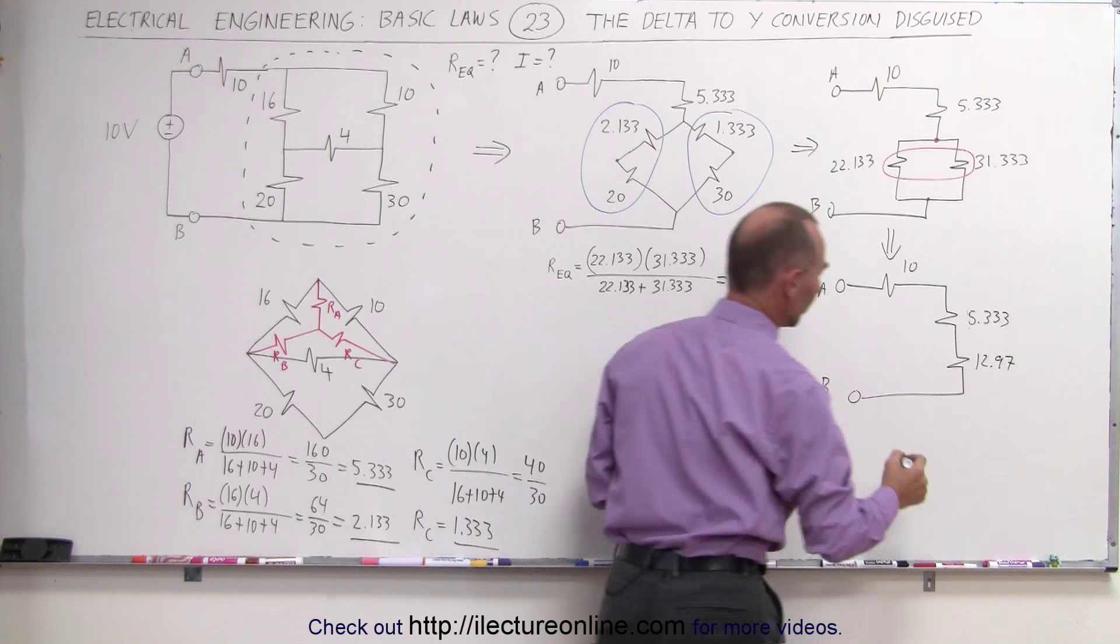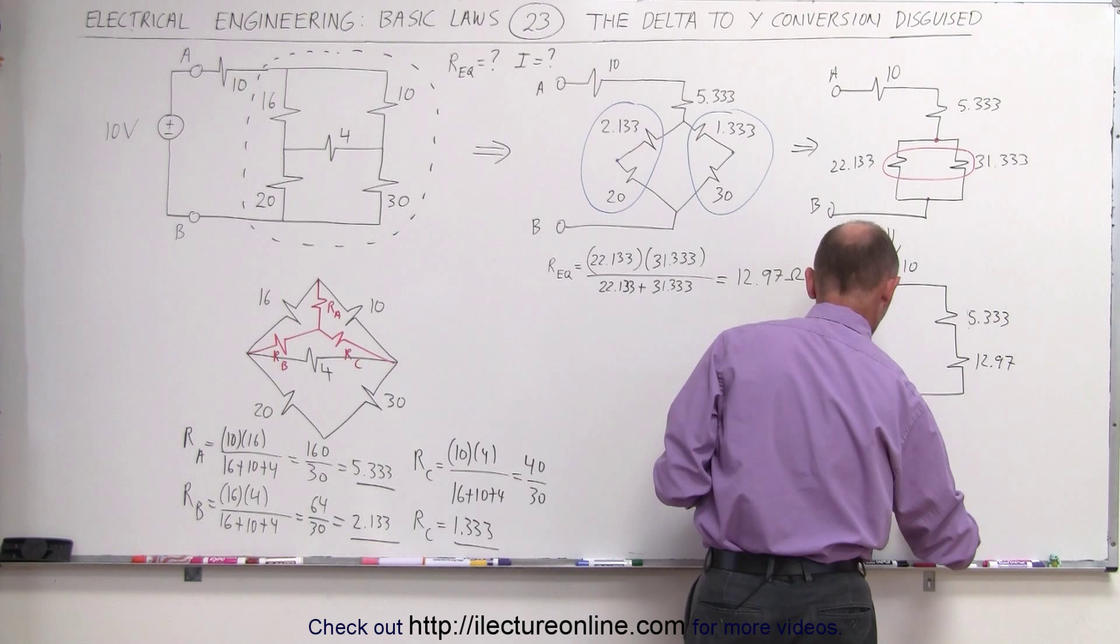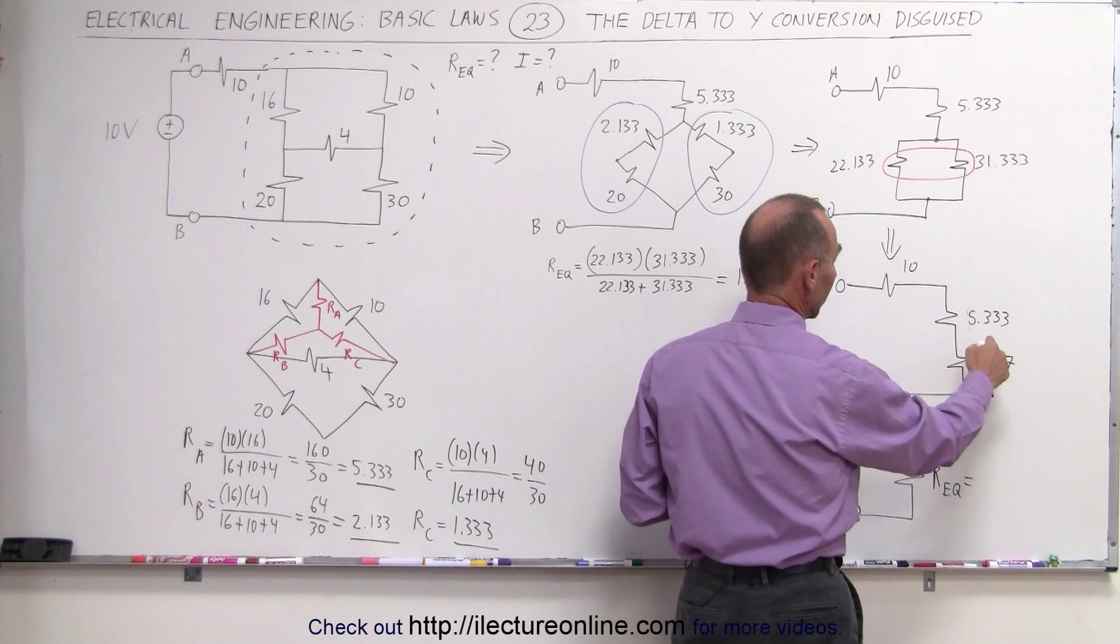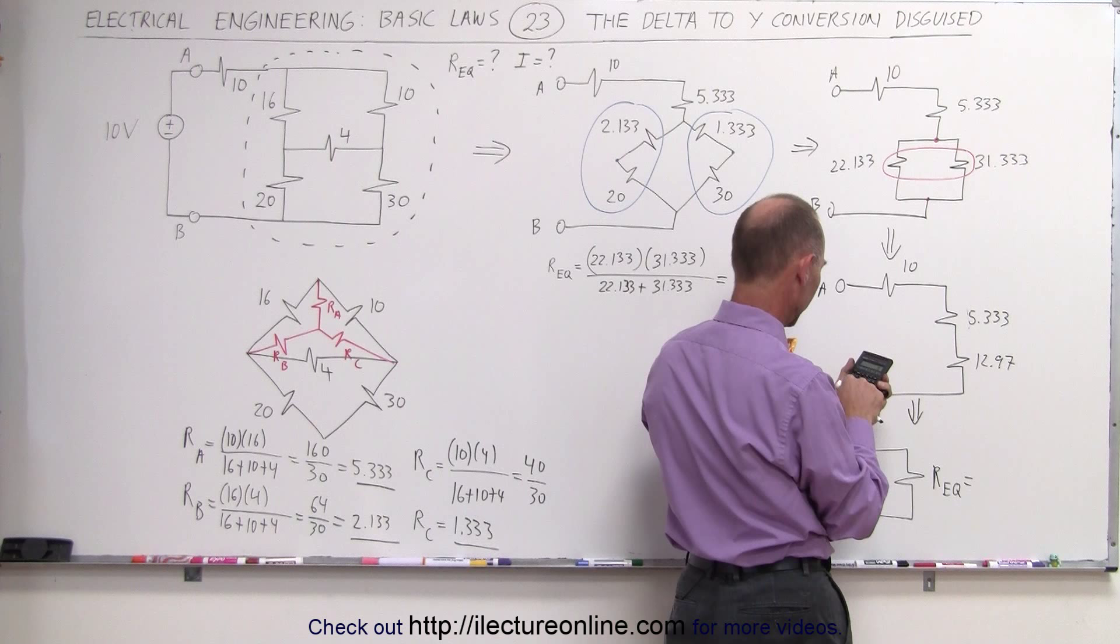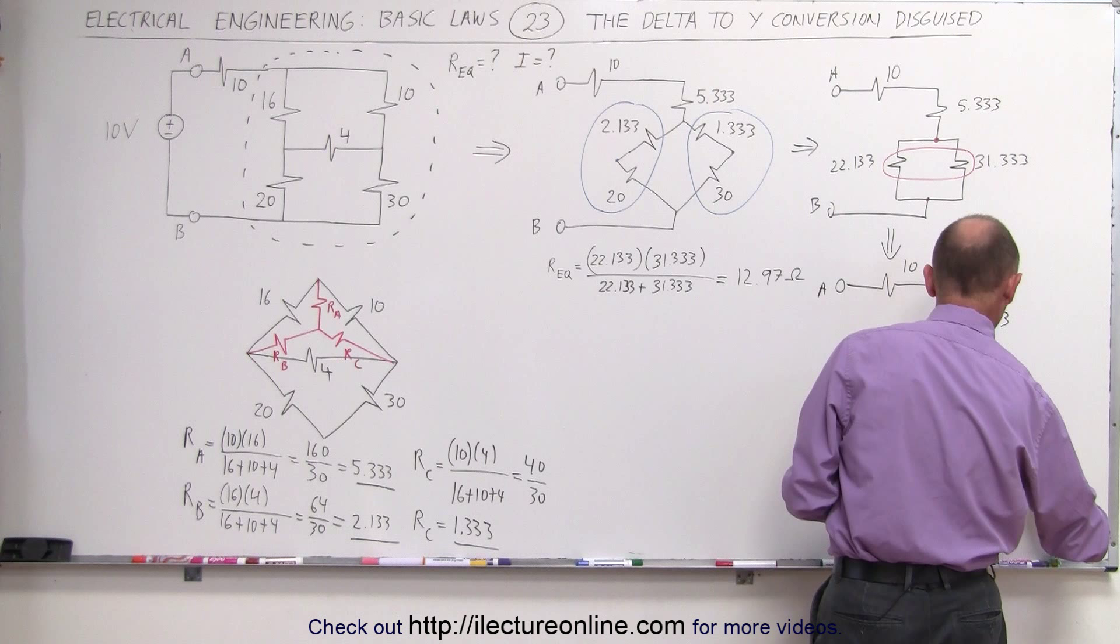Finally, we can combine all that into a single resistor between A and B. A single equivalent resistor. Our equivalent is now equal to the sum of those three. When we add this together, we get 10 plus 5.333 plus 12.97 equals 28.3, and just leave it at one decimal place. Ohms is the equivalent resistance.